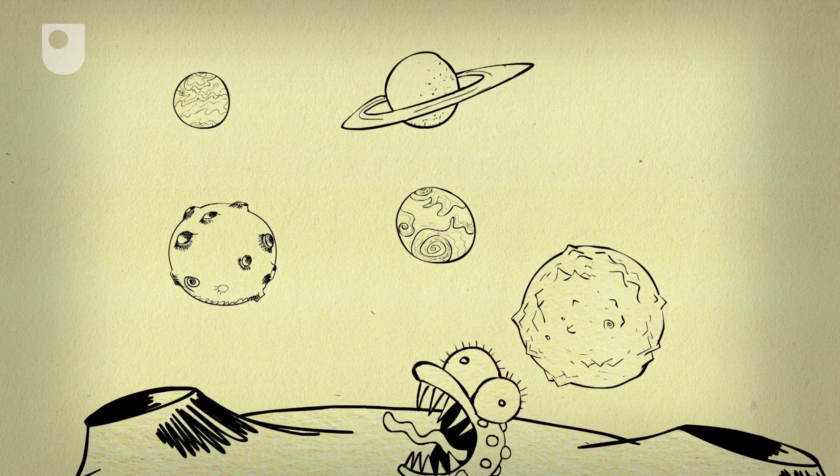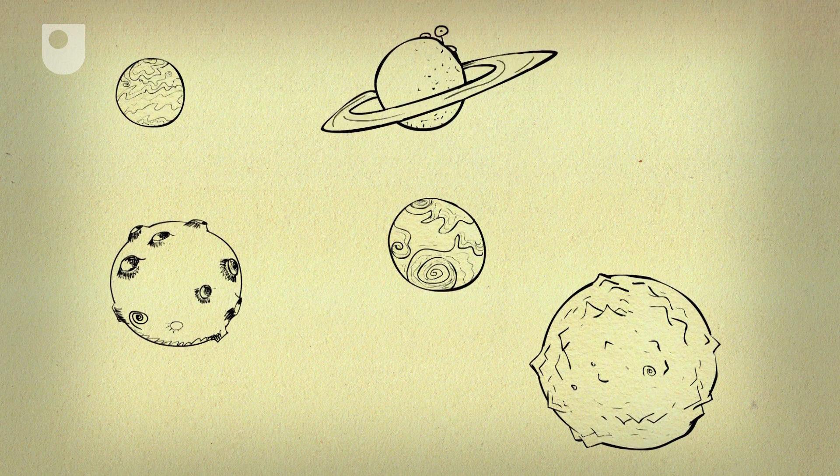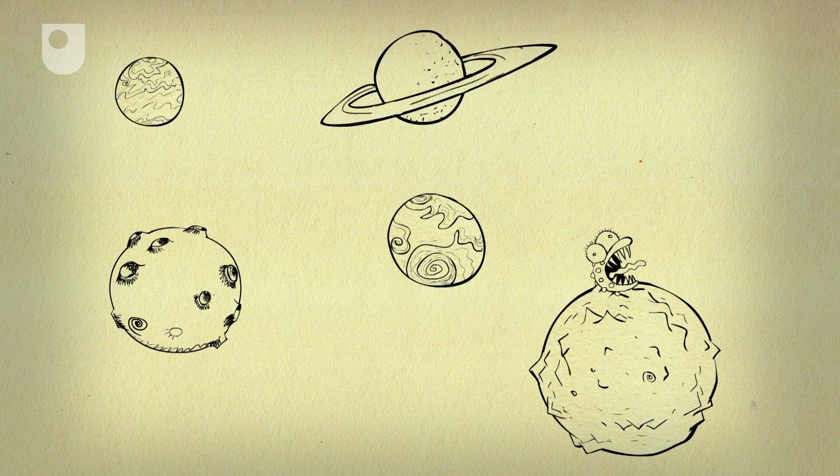if life on Mars started independently from life on Earth, then it's much more likely that it could also start in other places in the universe.